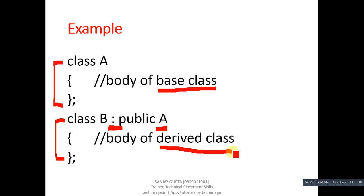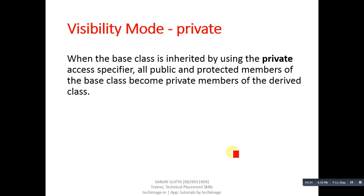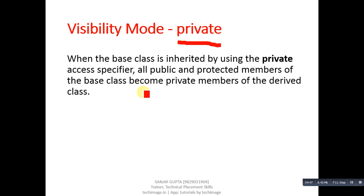Now let's look at visibility modes. In the private visibility mode, when the base class is inherited using the private access specifier, all public and protected members of the base class become private members of the derived class. This means if you create an object of the derived class, you cannot access the protected and public members of the base class through that object.